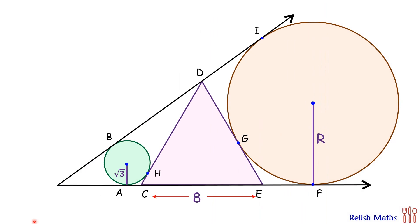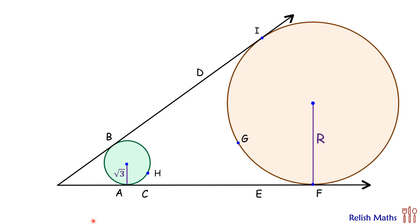Let's check the solution. We'll start with a theorem related to circles: for two circles, the length of the direct common tangent segments are equal, and thus the length of tangent AF will be equal to the length of tangent BI. We'll find the length of both tangents in terms of capital R, then solve to get the value of r.